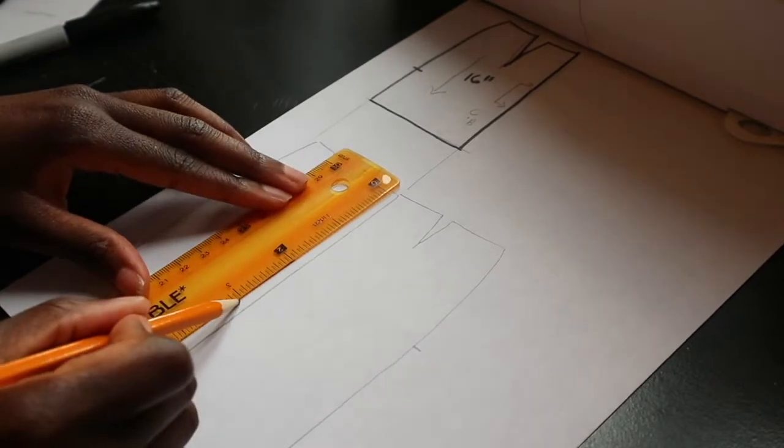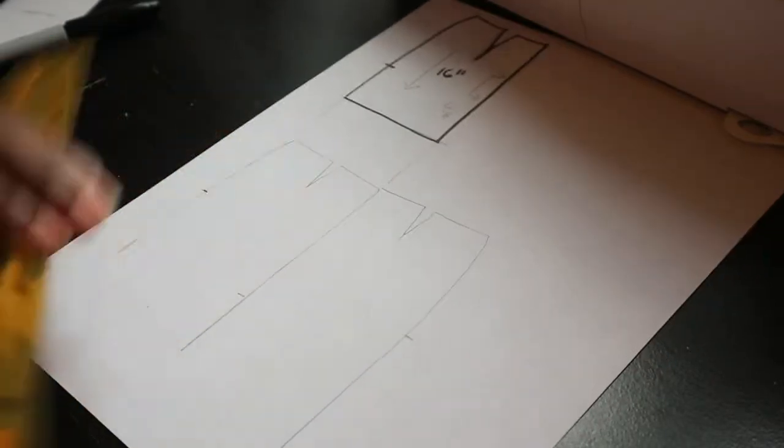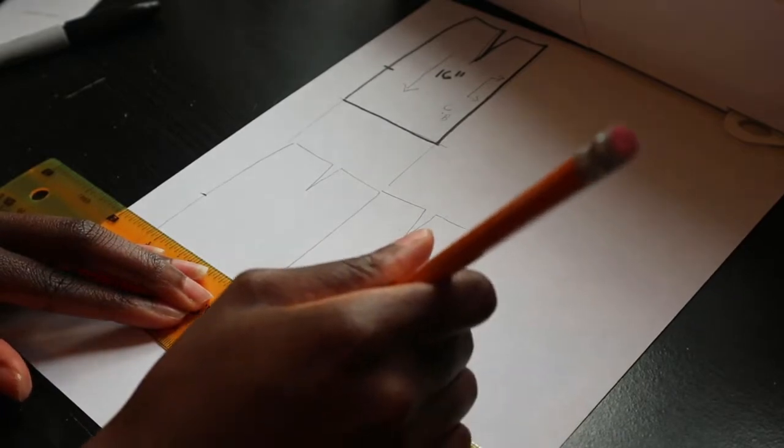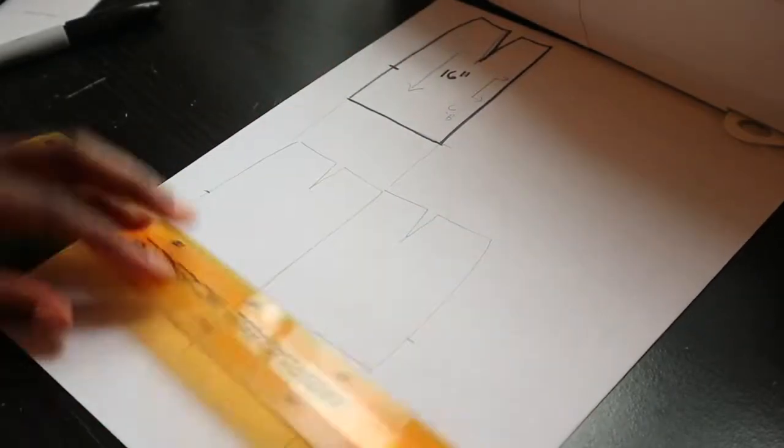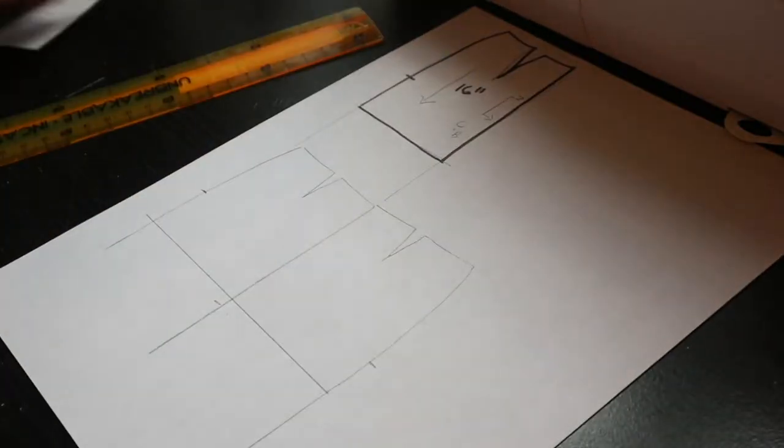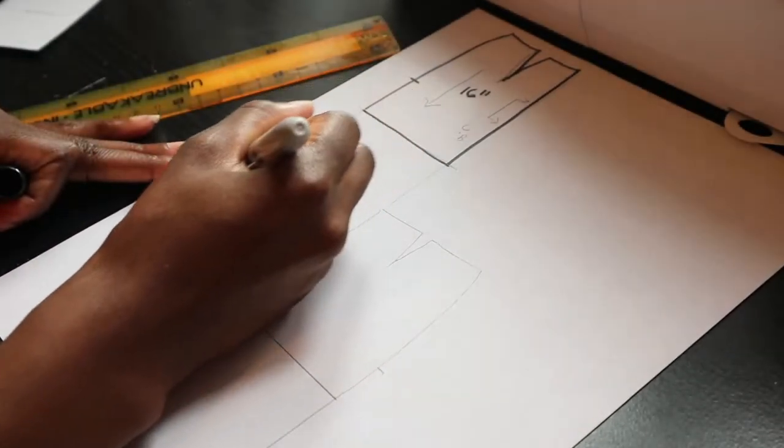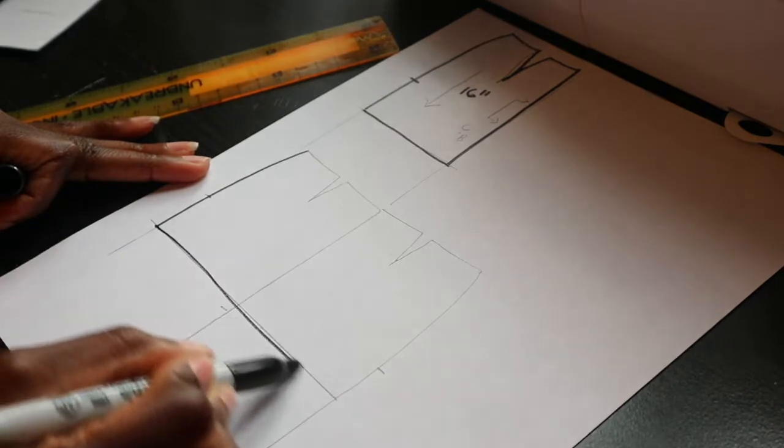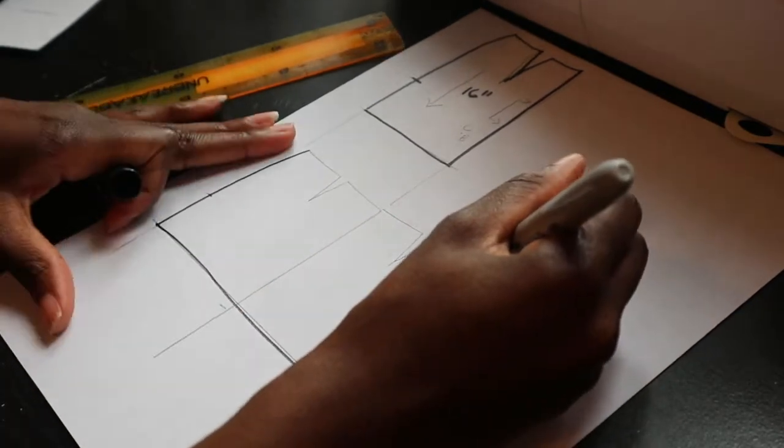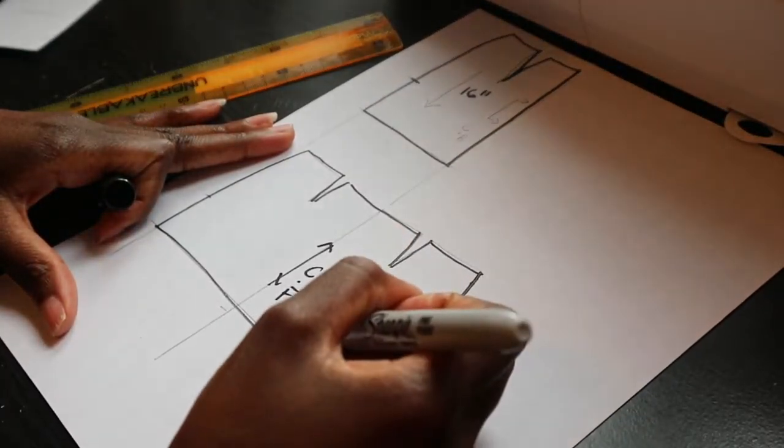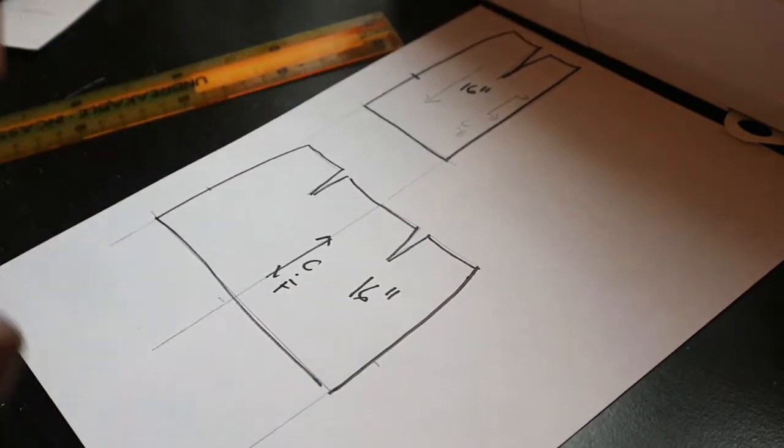I'm going to measure 16 inches down and that's where I'm going to stop at the hem. Again, you can do this to whatever desired length you want. If you want it longer, you would trace it out longer. I'm tracing it out in marker so you guys can see clearly what I'm doing.